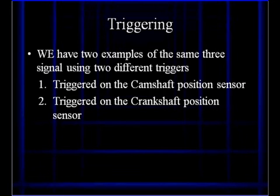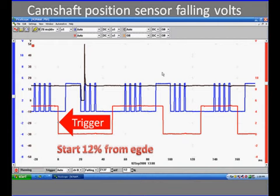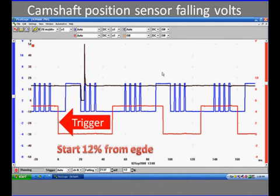We have two examples — we're going to look at triggering the camshaft and the crankshaft. We're doing the camshaft sensor, which in this case is red, triggering on the falling edge. We have three signals on the screen. We're starting at 12% from the edge, which moves the pattern in slightly because we want to see all the content on screen — we can position it wherever we need to.